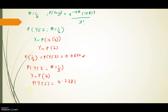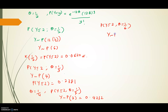For theta = 1/4, P(Y ≤ 2) gives Y ~ Poisson(3). From the stats table, K(1/4) = 0.4232. For theta = 1/6, P(Y ≤ 2) gives Y ~ Poisson(2), and from the stats table K(1/6) = 0.6767. For theta = 1/12, Y ~ Poisson(1), and P(Y ≤ 2) gives K(1/12) = 0.9197.